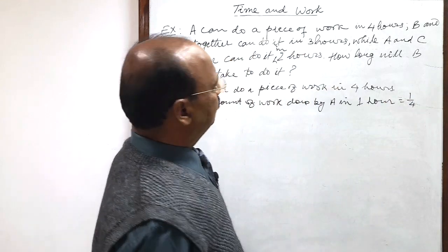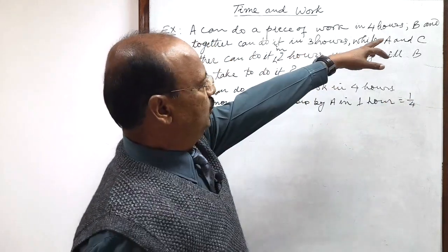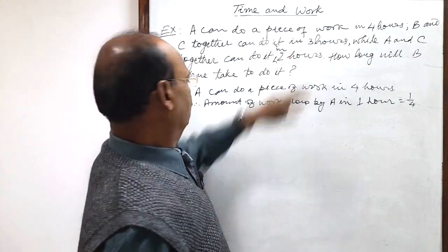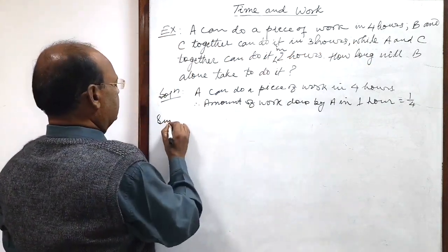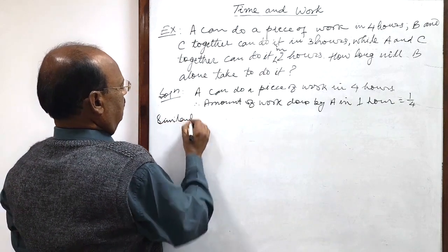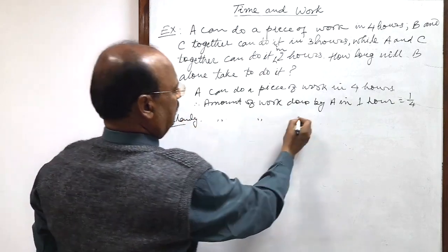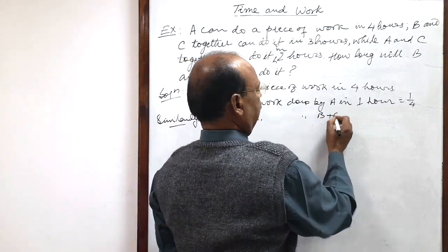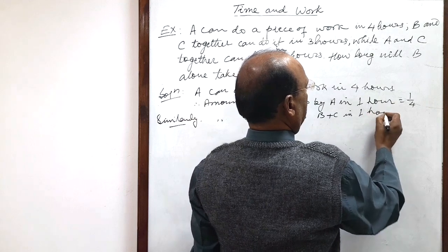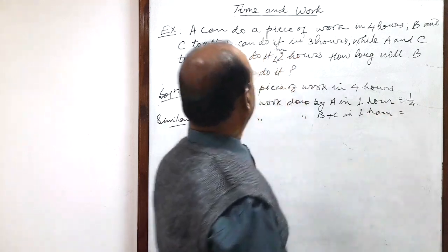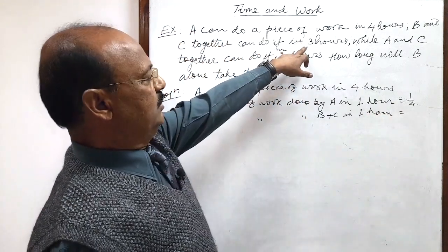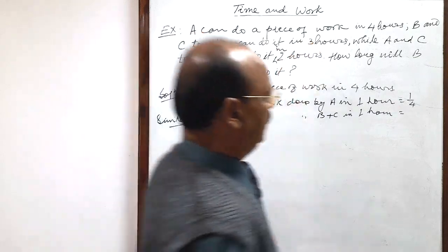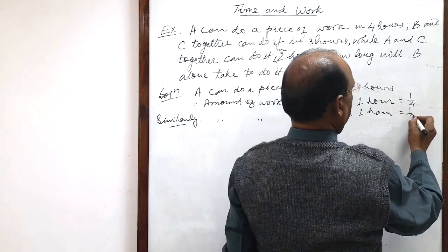Similarly, we will use the next line: B and C together can do it in 3 hours. So, writing the same pattern here — the amount of work done by B plus C in 1 hour is the reciprocal of 3, which is 1 by 3.